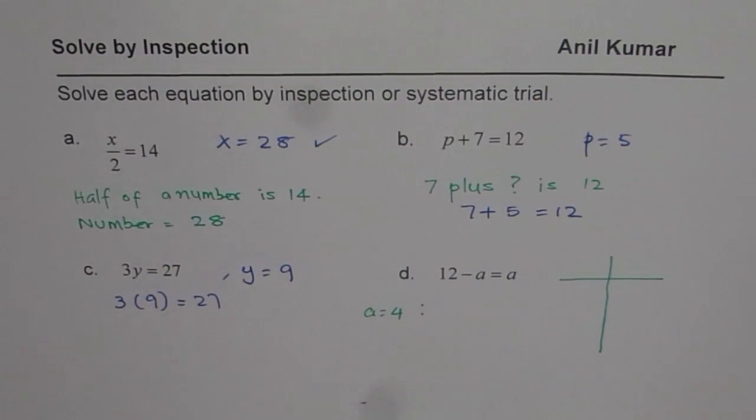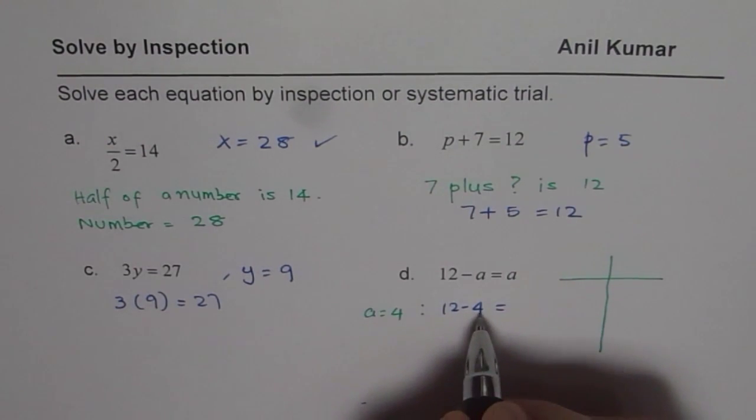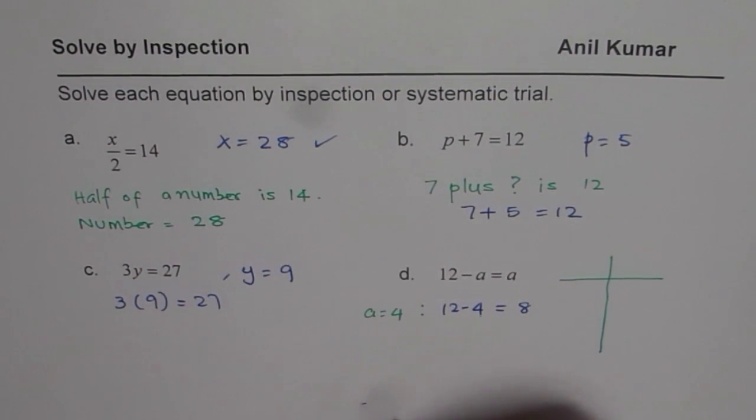So if I take a as 4, what do I get? I get 12 minus 4, and that is equal to 8, while it is not 4.